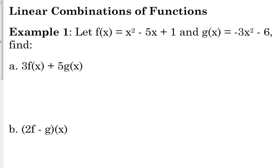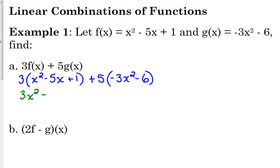So really, all we're going to do here, if we're trying to find 3f of x plus 5g of x, we're just going to substitute the expressions for those functions and we're going to simplify. So 3 times, I'm going to plug in my f of x function, plus 5 times g of x. I'm going to plug in my g of x function, negative 3x squared minus 6. And then I'm going to simplify that expression. I need to distribute those constants and combine like terms. So we've got 3x squared minus 15x plus 3. Make sure you distribute it to all your terms. Minus 15x squared minus 30.